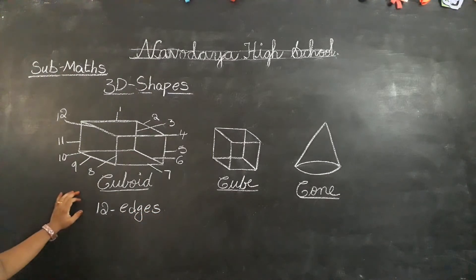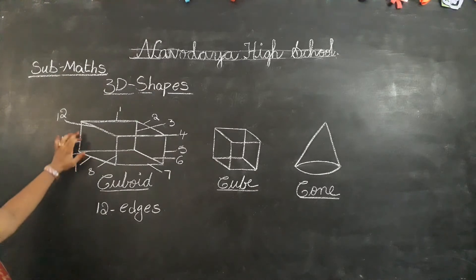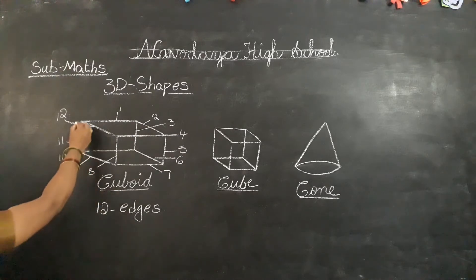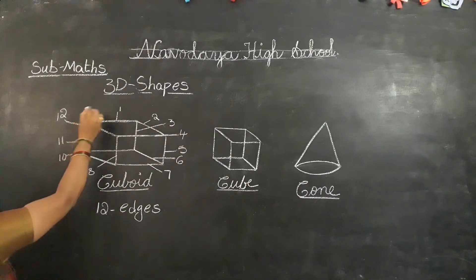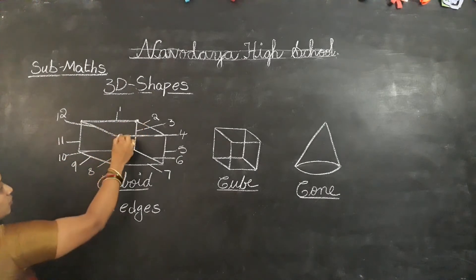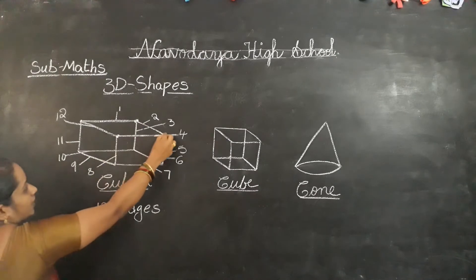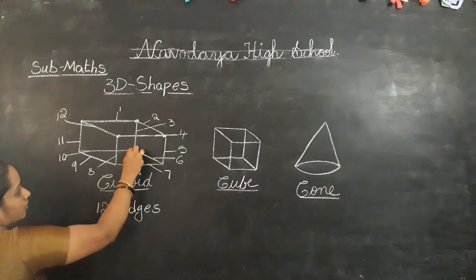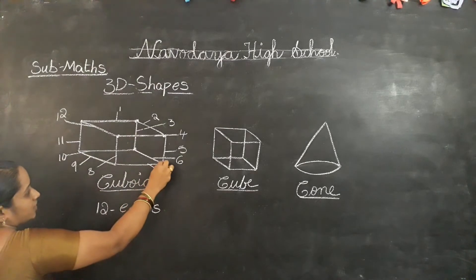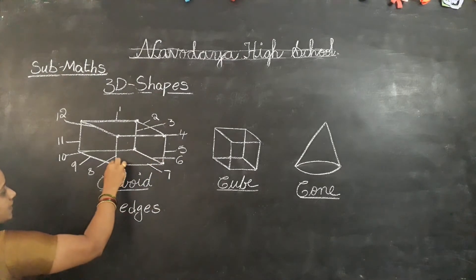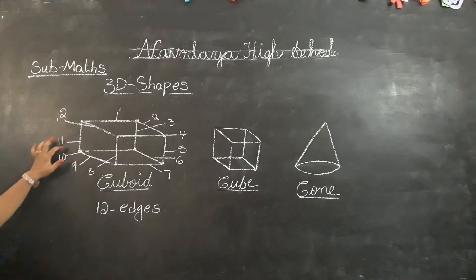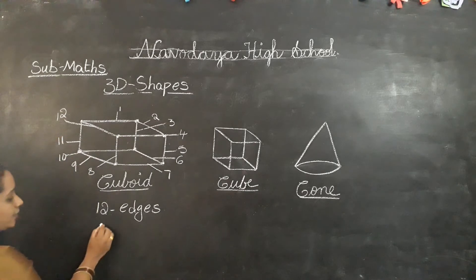Next, how many corners are here? Corners are vertices — we call them corners or vertices. Counting: 1, 2, 3, 4, 5, 6, 7, 8. How many corners in a cuboid? 8 corners.